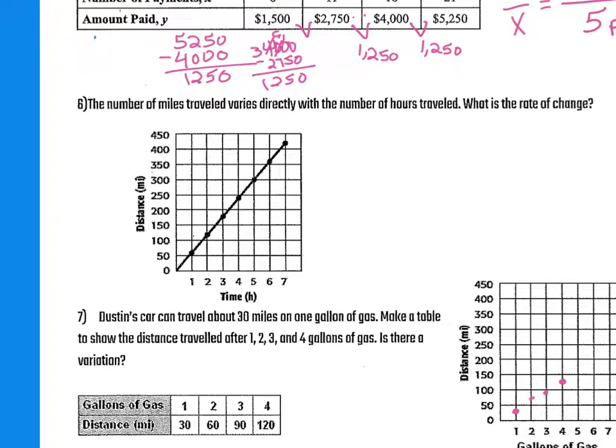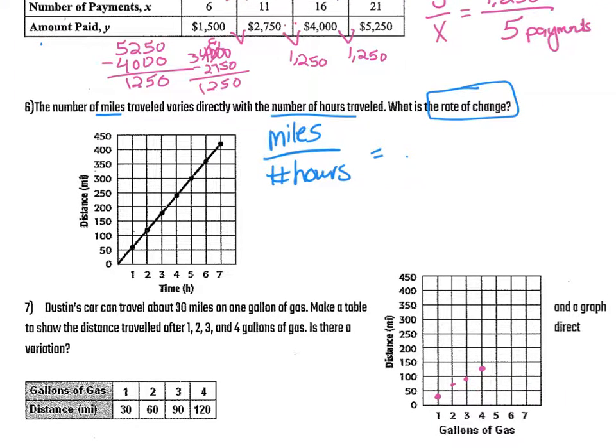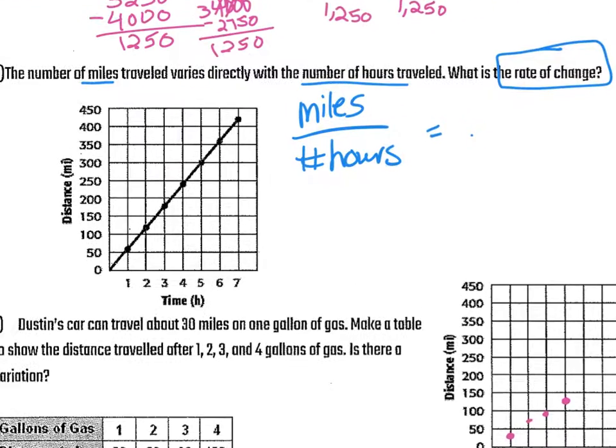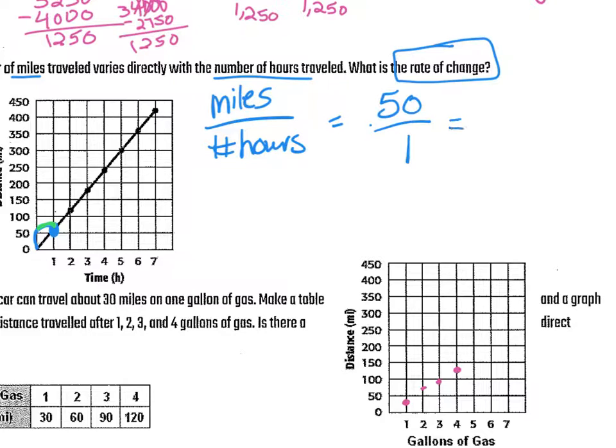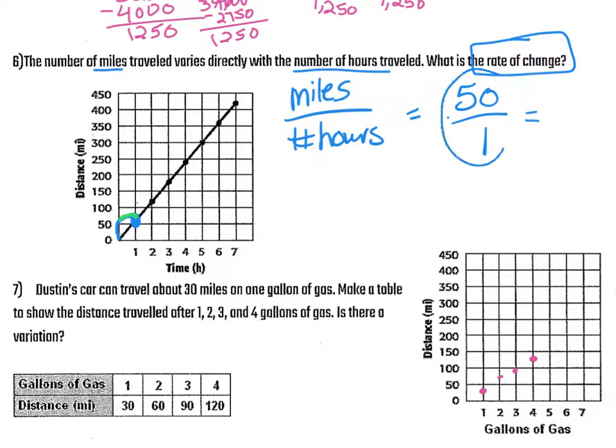Now the graph again. The number of miles traveled varies directly with the number of hours. So miles and number of hours. So what is the rate of change? That word, same thing. We're doing the same thing. They're just asking for rate of change now, but remember that means the same. So I still want to figure out what my change, my vertical change is over my horizontal change. So I'm going to use that first little dot there. So what's your vertical change? It went from 0 to 50, right? So my miles changed by 50 and then your change in x. 0 to 1. So 50 miles in one hour or 50.